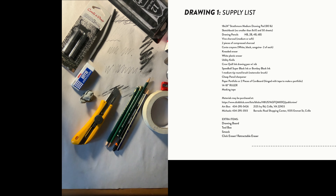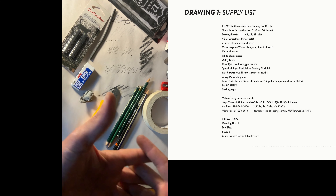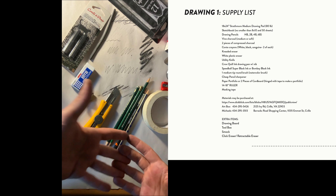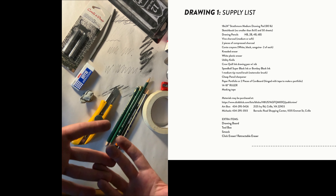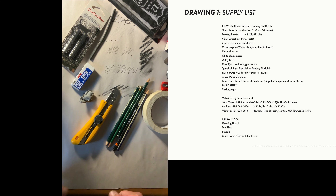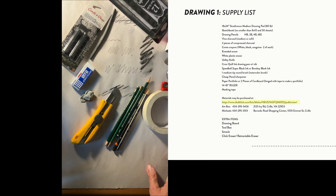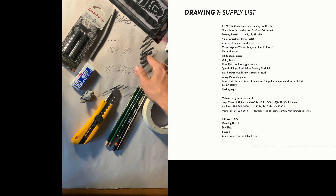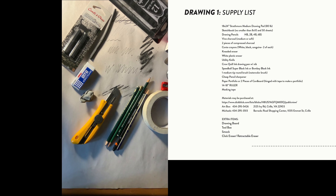The last thing is a drawing board — just a piece of wood or rigid surface. If you don't have one, you can draw on a flat table, but ideally you want your drawing pad facing upright. Check DickBlick.com to see what a drawing board looks like. Optional extra tools include a toolbox, a smock to protect clothing from charcoal, and a retractable eraser, which is very helpful for detailed charcoal work.